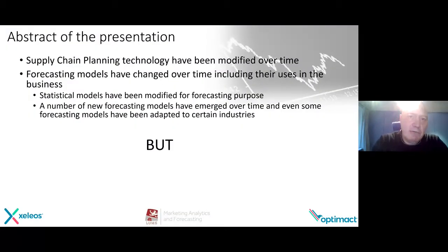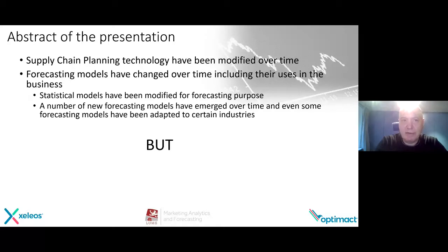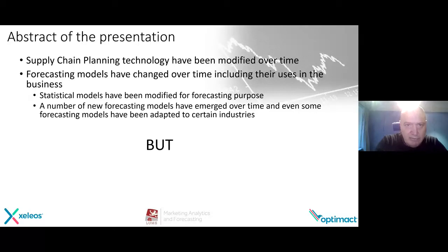The abstract of the presentation: what I often see is that if we talk about demand planning and forecasting software, this technology has been modified over time, and forecasting models have also changed. Statistical models have been modified and new forecasting models have emerged. Some forecasting models have been adapted to certain industries. But people talk quite a lot about technology, about artificial intelligence, about statistics, about algorithms.